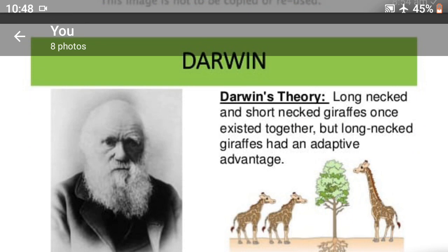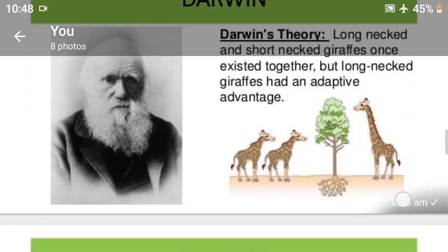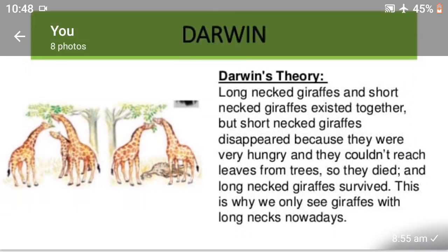Darwin's Theory: Long-necked and short-necked giraffes once existed together, but long-necked giraffes had an adaptive advantage. Short-necked giraffes disappeared because they were very hungry and could not reach leaves from the trees, so they died and long-necked giraffes survived. This is why we only see giraffes with long necks nowadays.